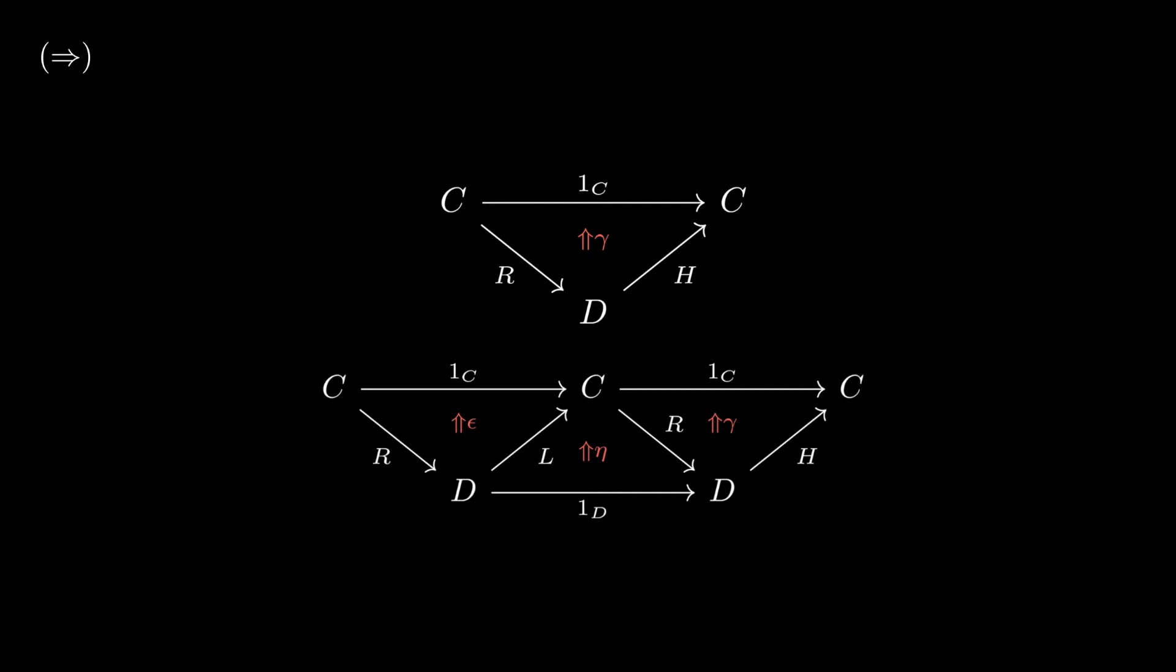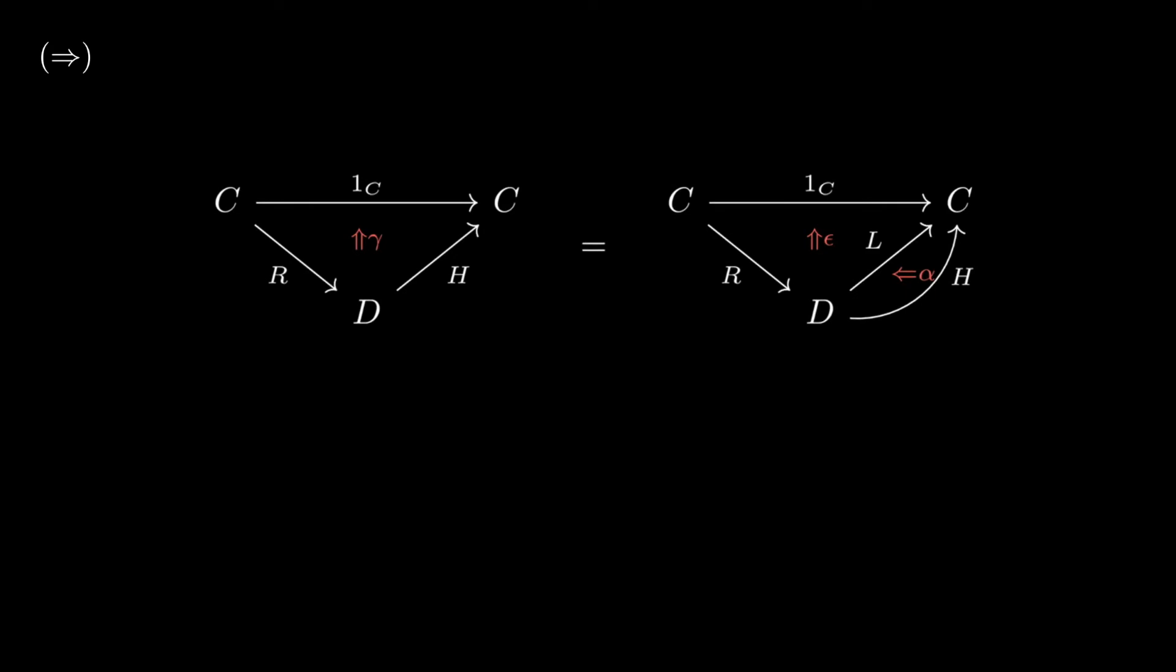So take any arbitrary factorization, and we want to show that this is the same as the factorization from before, i.e. that this arbitrary factorization is just eta followed by gamma.